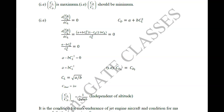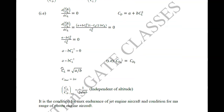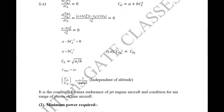All three terms — C_L, C_D, and C_L/C_D for minimum drag — are independent of altitude, so they don't vary with altitude. Later, when we derive the range and endurance equations, we find that the minimum drag condition is the condition for maximum endurance of jet engine aircraft and for maximum range of piston engine aircraft.